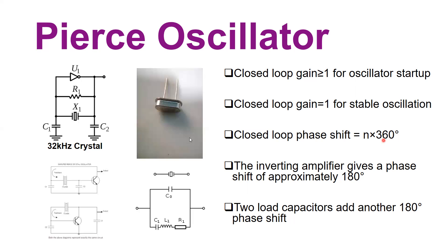The high-gain inverting amplifier provides a phase shift of approximately 180 degrees, and the two load capacitors add another phase shift of 180 degrees, making the total loop phase shift approximately 360 degrees, which satisfies the phase condition for oscillation.